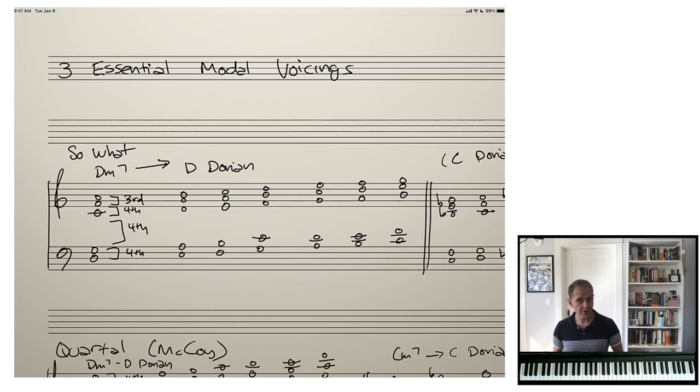So the interval pattern for a So What voicing is a fourth, fourth, fourth, and then a third on top. Then we're going to move that through the mode. Now here's where I find students getting confused: we're not literally transposing each of these intervals, we're only going to use notes from that mode.